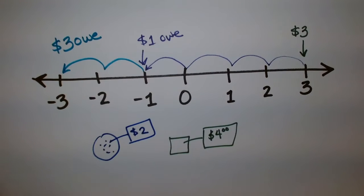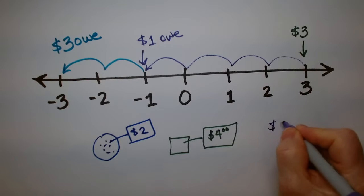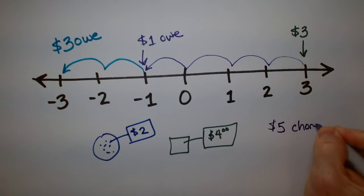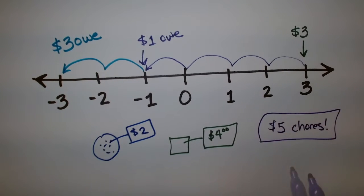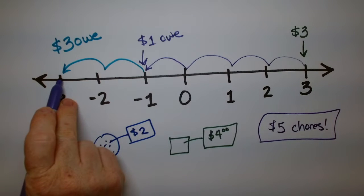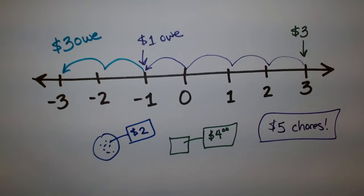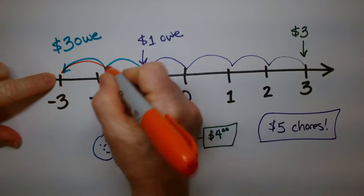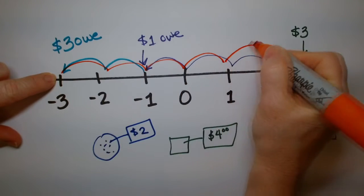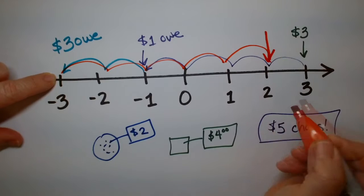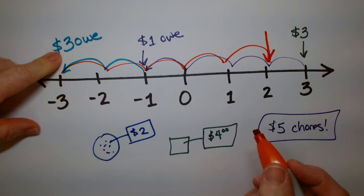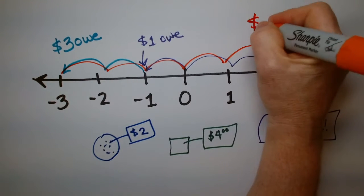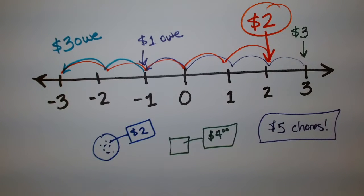Now imagine you do some chores and you earn $5. So which way are we going to go? For $5, we're actually going to put money in our bank — one, two, three, four, five hops. So now I can pay the $3 I owe, and how much do I have in the bank? I have $2 to my name, and I don't owe anybody any money.